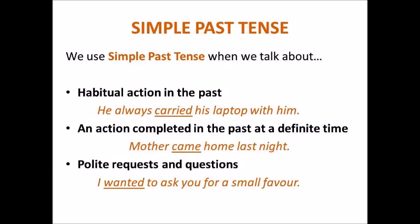We use simple past tense when we talk about a habitual action in the past. For example: he always carried his laptop with him. We also use simple past tense when we talk about an action completed in the past at a definite time. For example: mother came home last night.